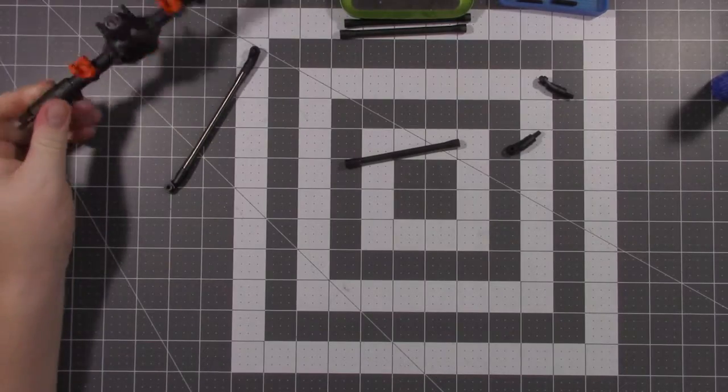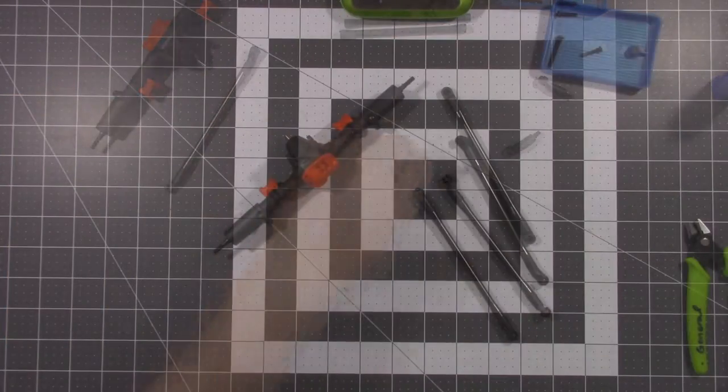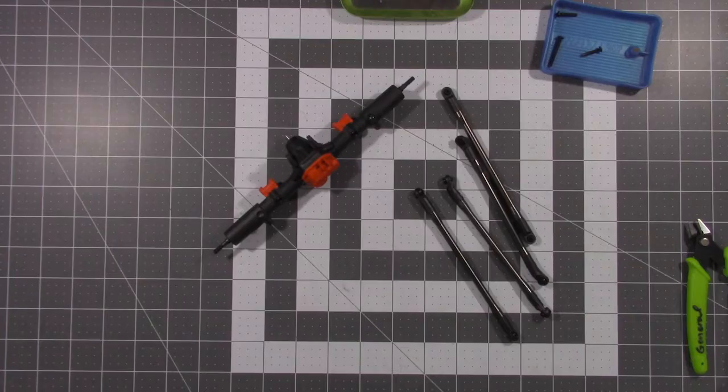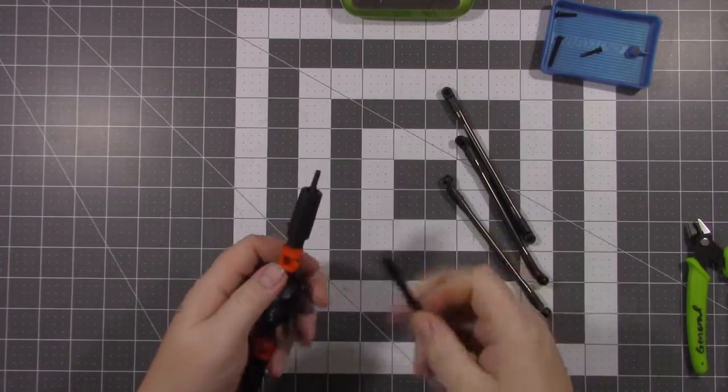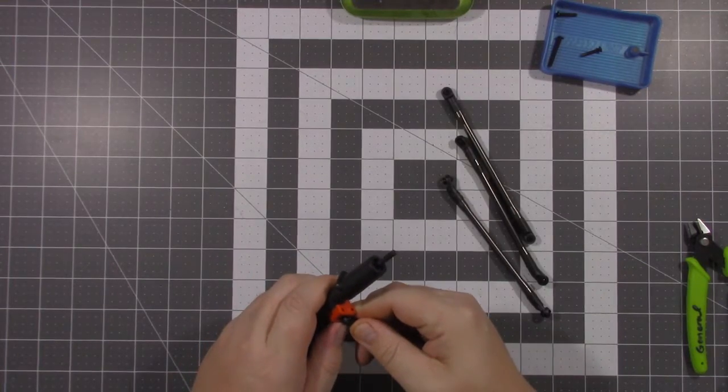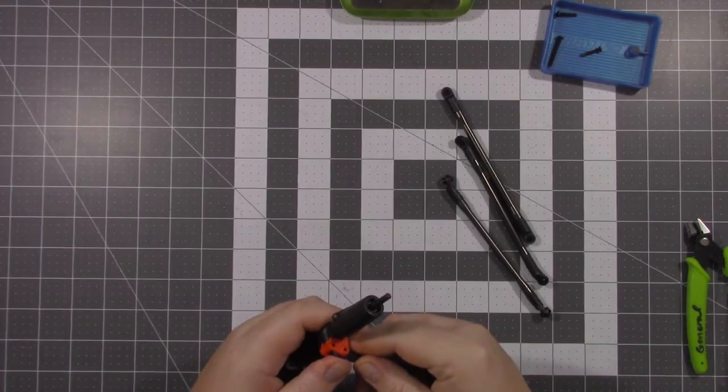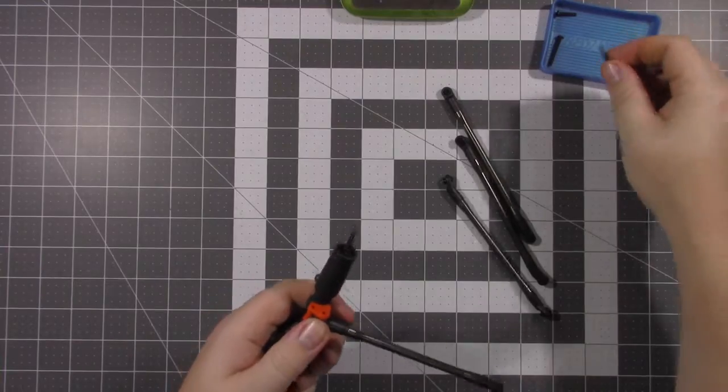All right guys we're back, we've got all the links put together. Now we're going to put them on the axle housing. Me personally, I always start with the bottom links. Really doesn't matter which one you start with. You slide it in there, you use an M3 by 15 millimeter screw.